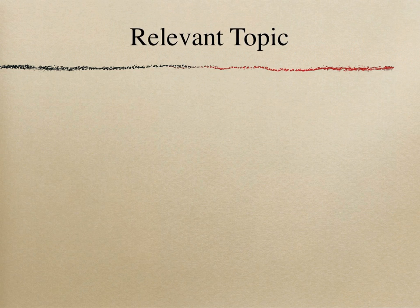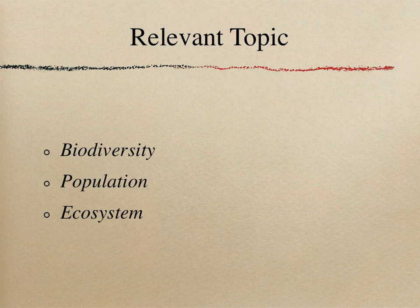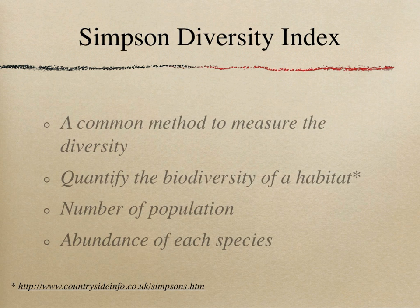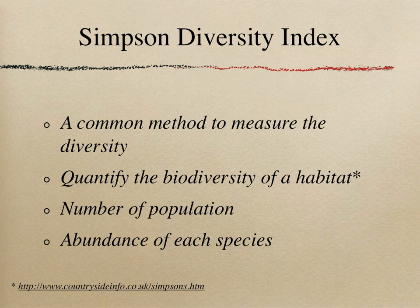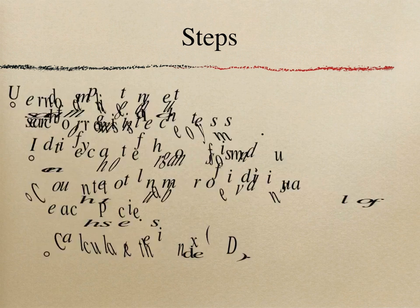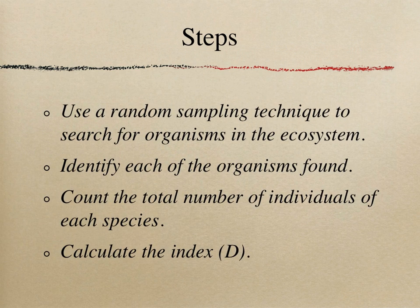Simpson Diversity Index is related to biodiversity, population, and ecosystem because the index itself is the calculation of the diversity of populations in an ecosystem. For those who are not familiar with this method, Simpson Diversity Index is a common and simple mathematical method to measure the species' diversity in a community. It is often used to quantify the biodiversity of a habitat, and it explains the number of populations as well as the abundance of each species. Due to Simpson's easy steps to measure biodiversity, it is frequently used in ecology.